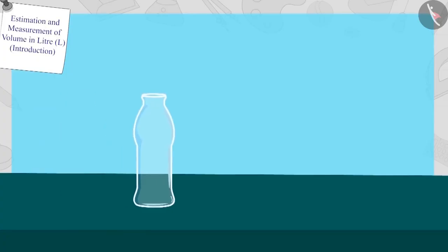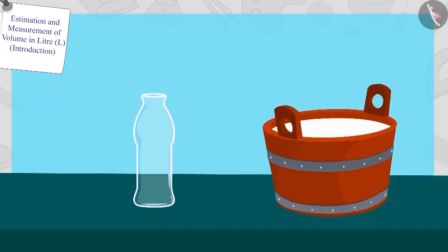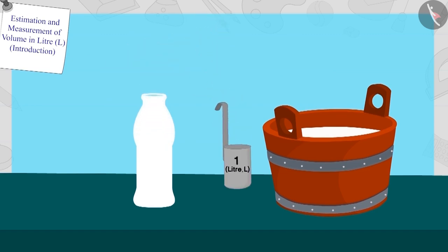Golu first took one bottle of this size. He poured milk into the bottle using his one liter measuring scale. The bottle was this full after pouring one liter of milk. Now Golu poured one more liter of milk with his liter scale into that bottle. This time, the bottle was completely full.